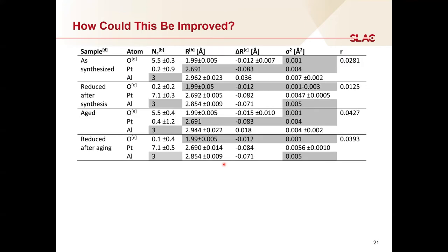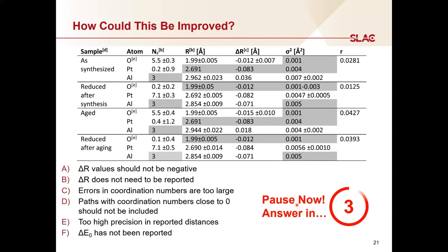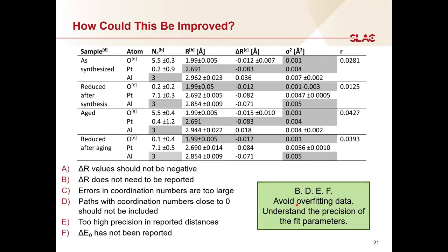Now let's look at a table of EXAFS fit parameters. The sample has been measured in 4 states, summarized in the first column, and we can see the fit parameters. For this question, select all that apply. The answers are B, D, E, and F. Option A is incorrect — delta-r values can be negative. Option B: the delta-r parameter should not be reported in the final table. Option D: paths with coordination number close to 0 should not be included. Option E: there is too high precision in the reported distances. Option F: the delta-E0 values have not been reported.